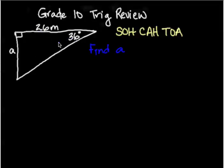The first step is to label the sides of your triangle. We always start with the hypotenuse, which is the side across from the right angle.